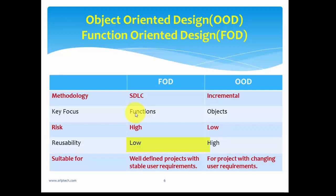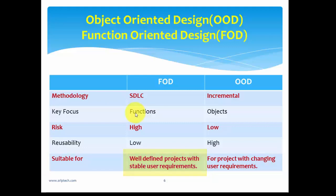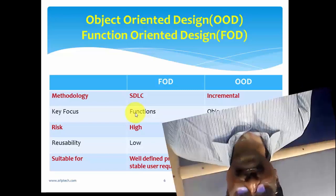Regarding reusability, function-oriented design has low reusability — functions can be reused but to a limited extent — while object-oriented design has high reusability. Overall, object-oriented design has significantly more advantages than function-oriented design. Finally, function-oriented design is suitable for projects with stable user requirements that do not change often, whereas object-oriented design is used when requirements are dynamic and keep changing.